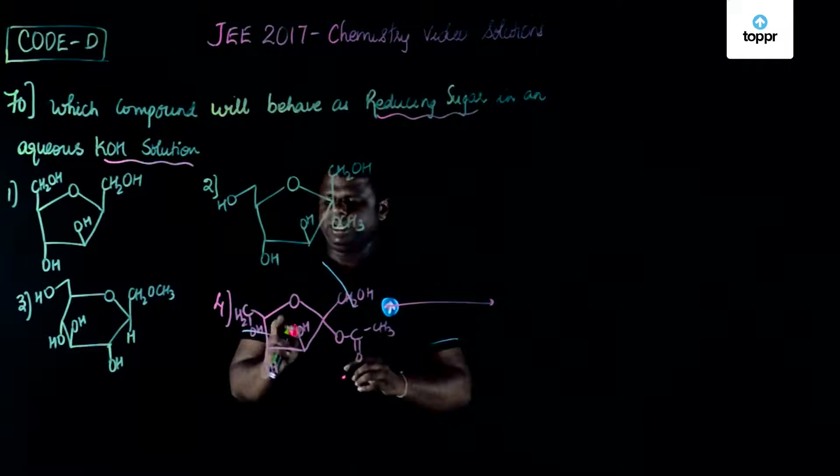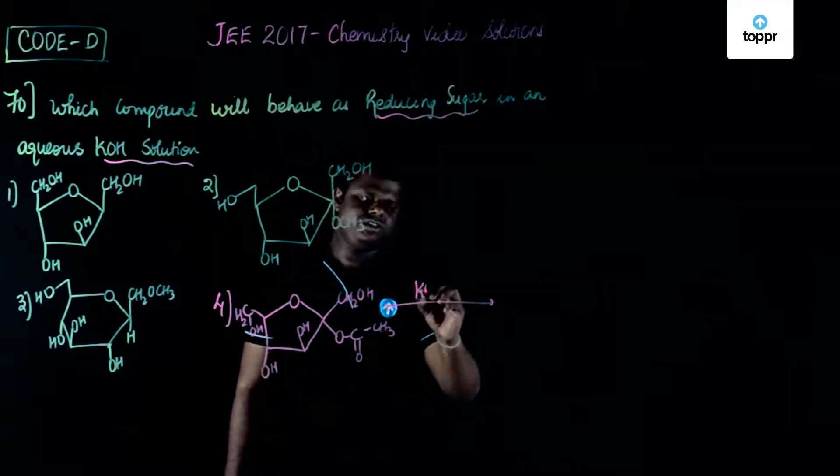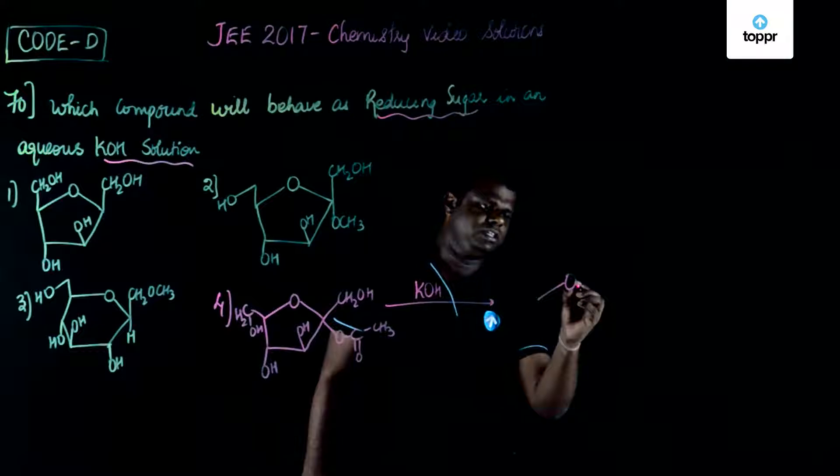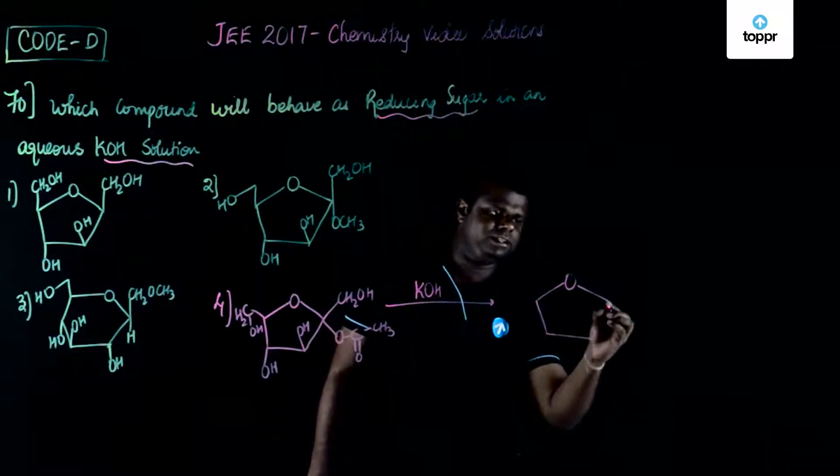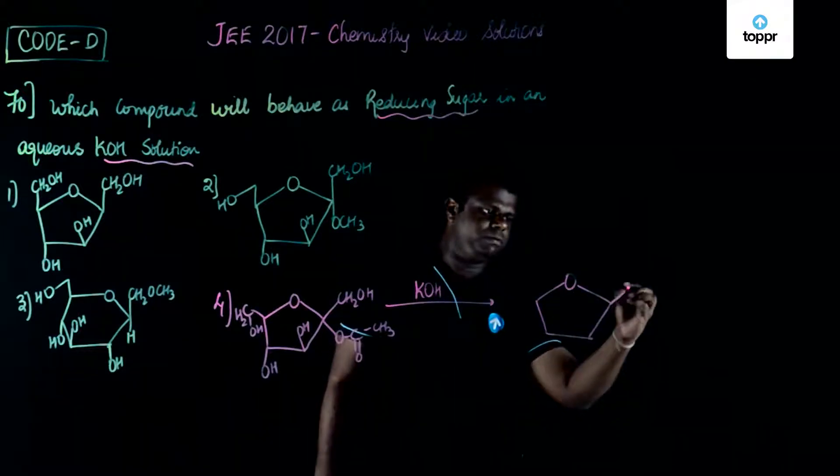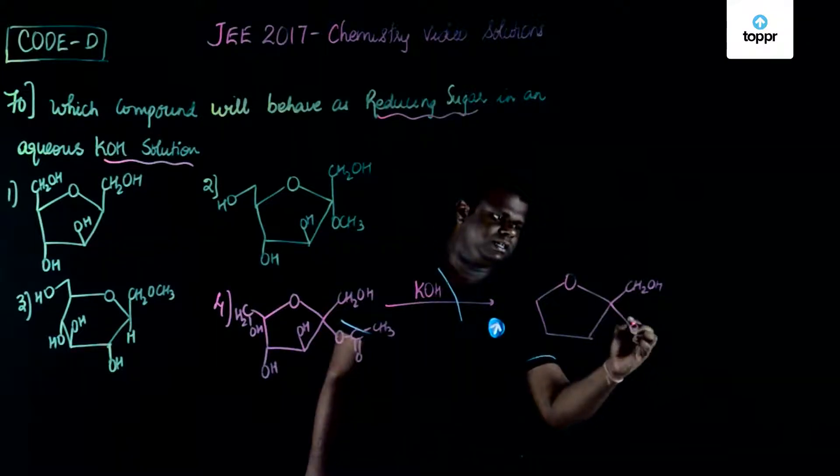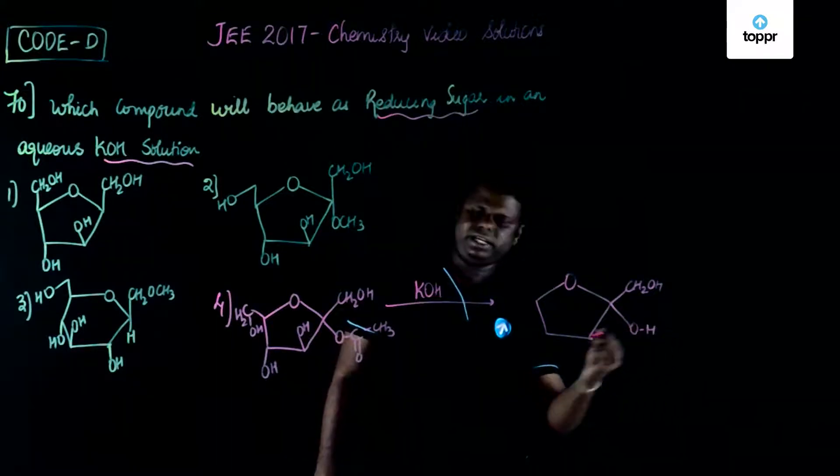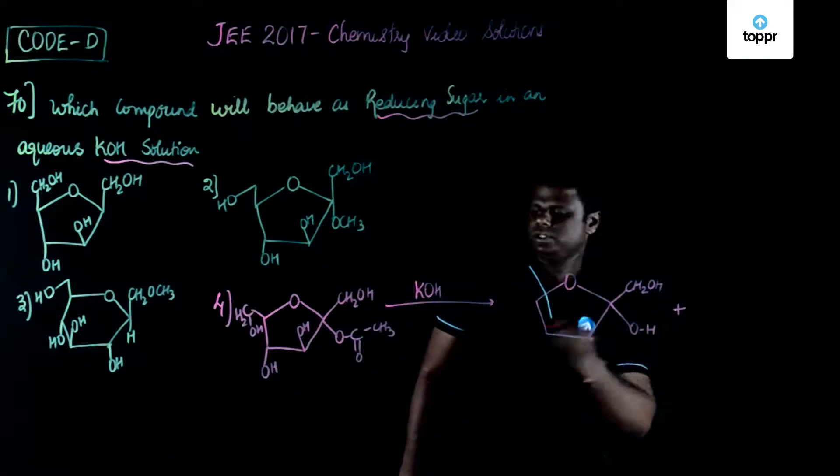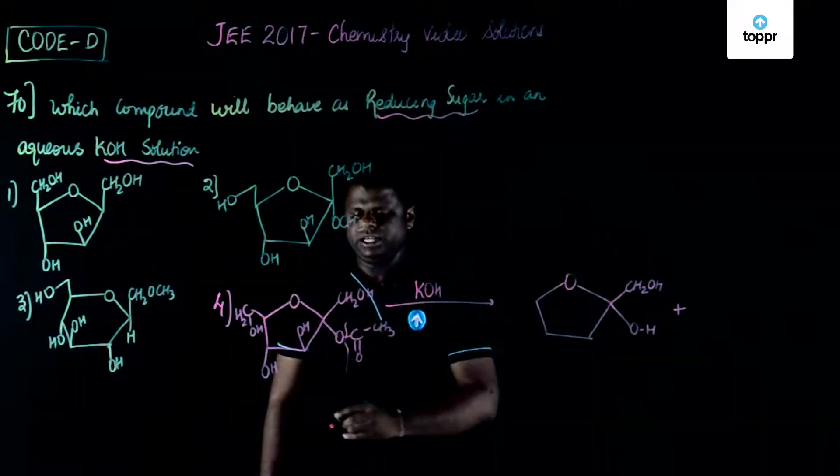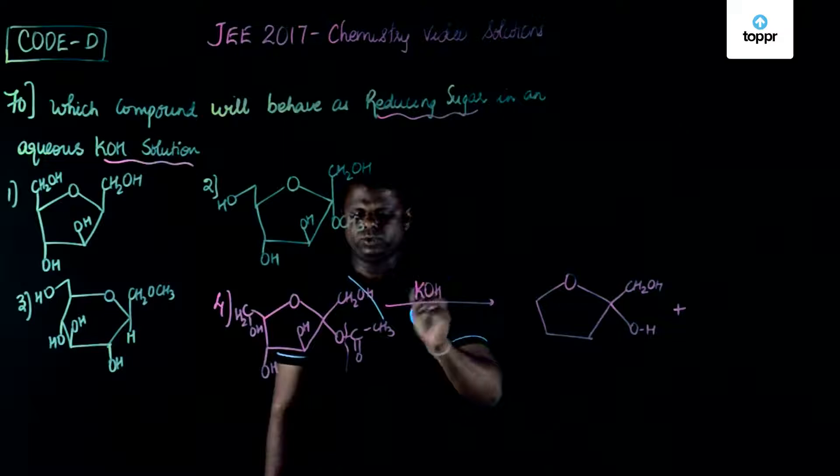Now what exactly would happen here? First when this is treated with KOH, it would undergo hydrolysis and you would be getting something different. You would be getting something like CH2OH here and then OH. The bond would break like this and you see KOH, it would be K plus OH minus.